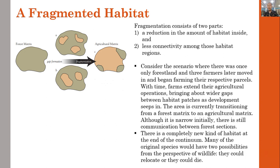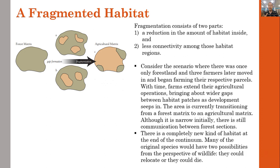Consider the scenario where there was once only forest land, and three farmers later moved in and began farming their respective parcels. With time, the farms extend their agricultural operations, bringing about wider gaps between the habitat patches as development seeps in. The area transitions from a forest matrix to an agricultural matrix. Although it is narrow initially, there is still communication between the forest sections — there is still connection, but a completely new kind of habitat has been formed.